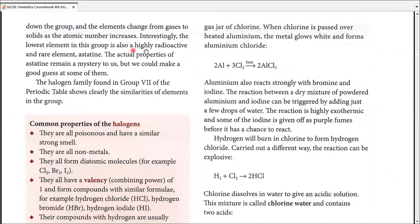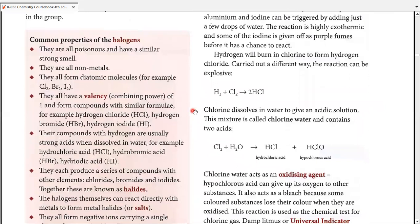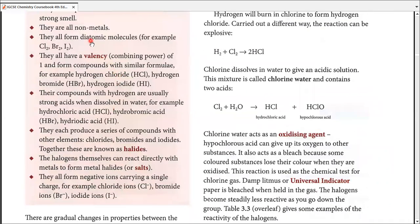Astatine is highly radioactive and rare. We don't even know about its properties completely. When we discuss halogens, we will always be discussing from fluorine all the way to iodine. The most common properties: they're all poisonous and have very similar strong smells. They're all non-metals. They all can form diatomic molecules. Di means two, atomic comes from atom, which means a molecule made up of two atoms like Cl2, Br2, I2, F2.